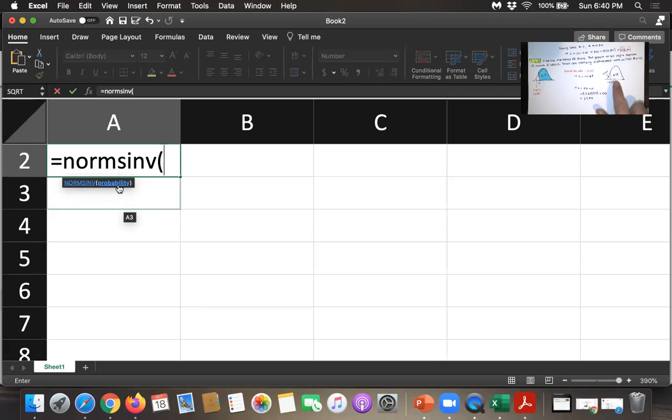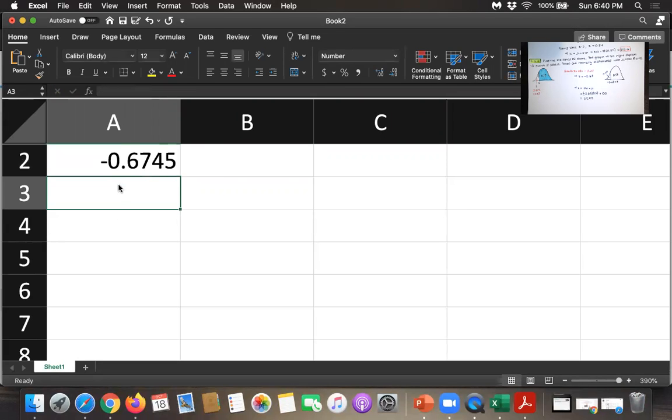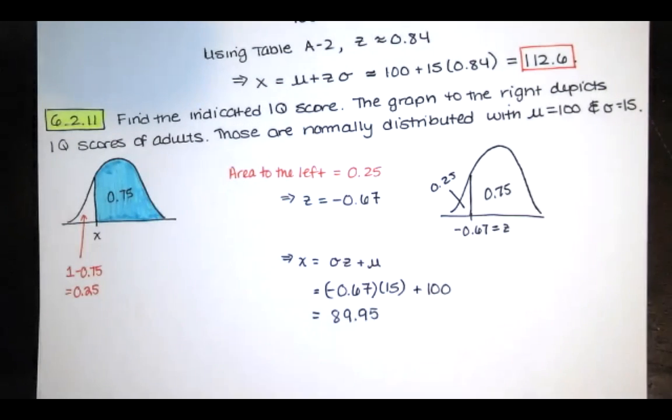Now for us, for our problem, the area to the right was 0.75, so the area to the left is 0.25. So we'll type 0.25 there, close parentheses, and we get a z-score of negative 0.67, which is exactly what we got when we used the tables. So you can use the table or you can use Excel and you're going to get the same z-score.